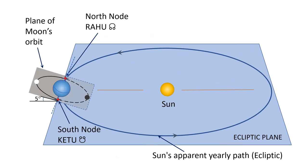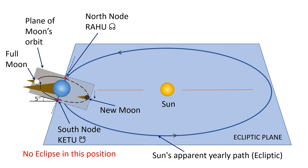But now look at the next screen — see the positions of Full Moon and New Moon. Here, when there is a Full Moon or New Moon, the Moon is not aligned with the Sun and the Earth in the ecliptic plane. It is below the ecliptic plane when it is a New Moon and above the ecliptic plane when it is a Full Moon. So the shadow of the Earth will not fall on the Moon during the Full Moon, and the shadow of the Moon won't fall on the Earth during the New Moon. And hence eclipses won't happen during these New Moon and Full Moon positions.